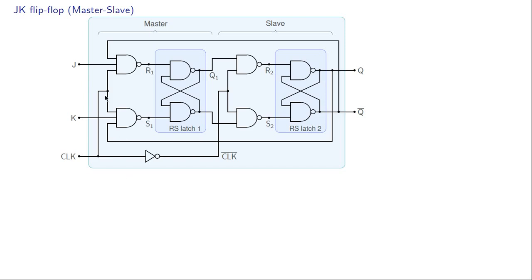Let us now discuss the JK flip flop, in particular the master-slave configuration. Here is the complete circuit. The inputs are clock, J, and K, and the outputs are Q and Q-bar. Within the JK flip flop we have a master part and a slave part. The slave part is a clocked RS latch, and the master part is similar but has three-input NAND gates. This input comes from Q-bar of the JK flip flop, and this input comes from Q.